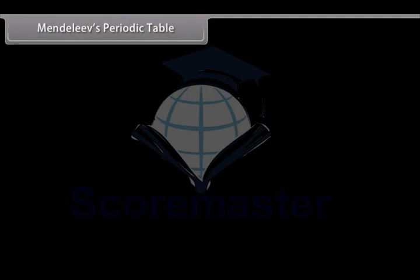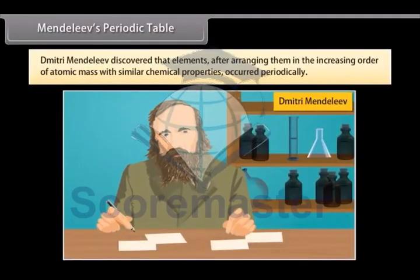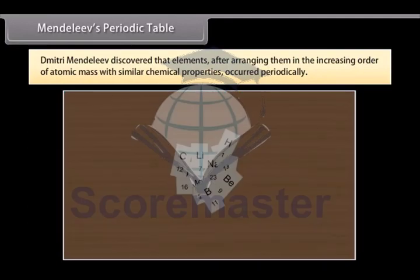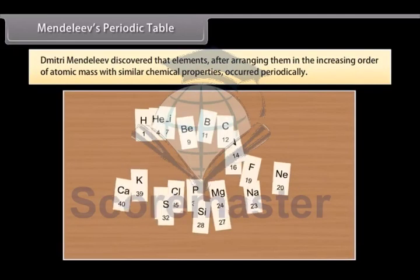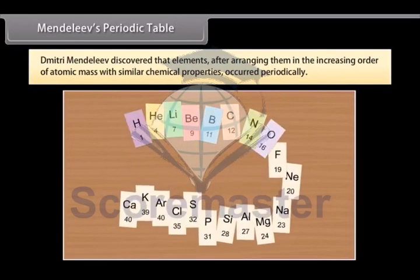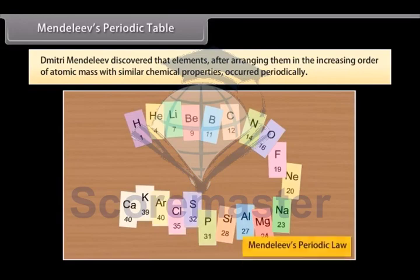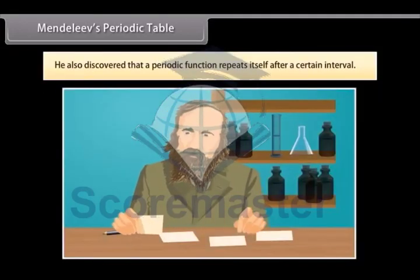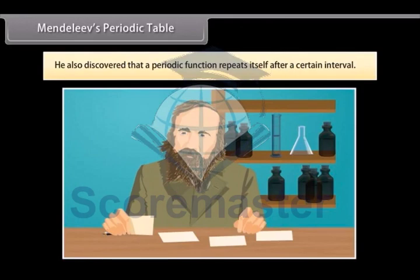Mendeleev's Periodic Table. Dmitry Mendeleev, a Russian chemist, discovered that elements, after arranging them in the increasing order of atomic mass with similar chemical properties, occurred periodically. In 1869, he stated this observation in Mendeleev's Periodic Law. He also discovered that a periodic function repeats itself after a certain interval.